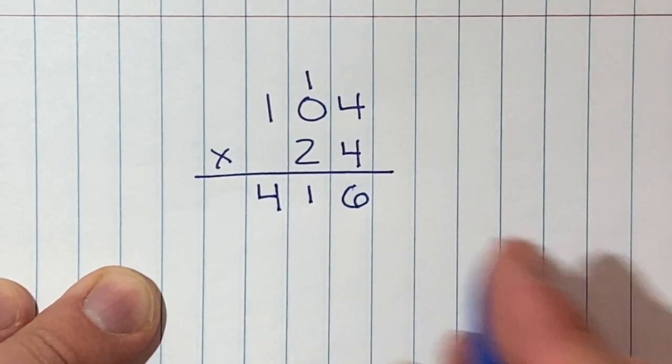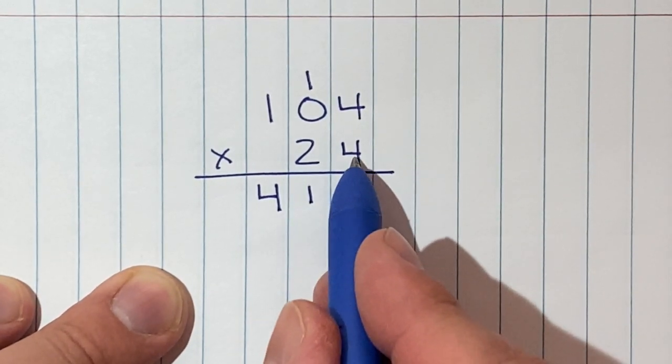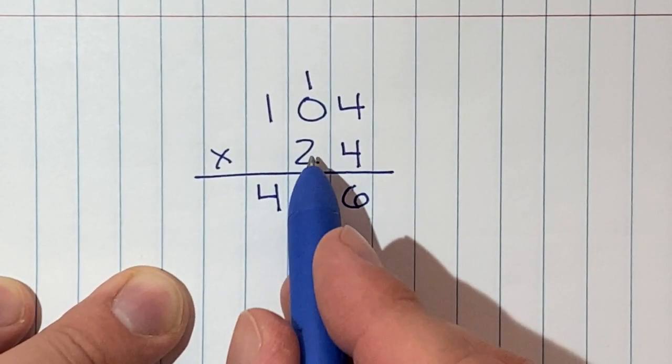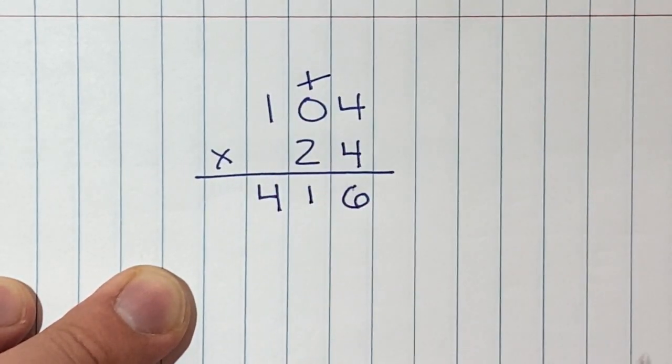Now what we need to do is multiply by the 20, because we just did times four, but now this two is really a 20. It's 24.